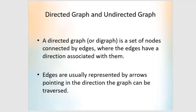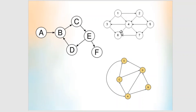Next is the concept of directed graph and undirected graph. A directed graph, or digraph, is a set of nodes connected by edges where the edges have a direction associated with them. Edges are usually represented by arrows. Here, edges go from A to B, B to C, C to E, E to D, D to B, and E to F. If the edges in a graph have a direction, that graph is called a directed graph or digraph.